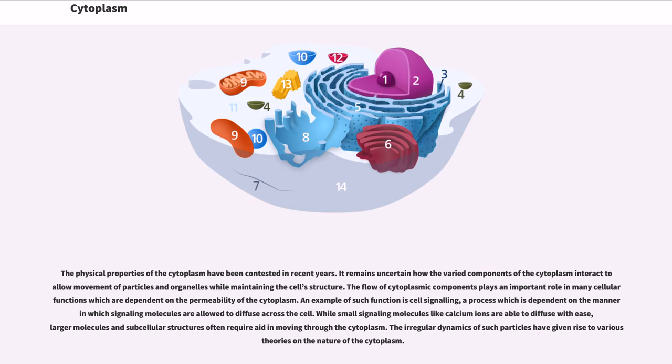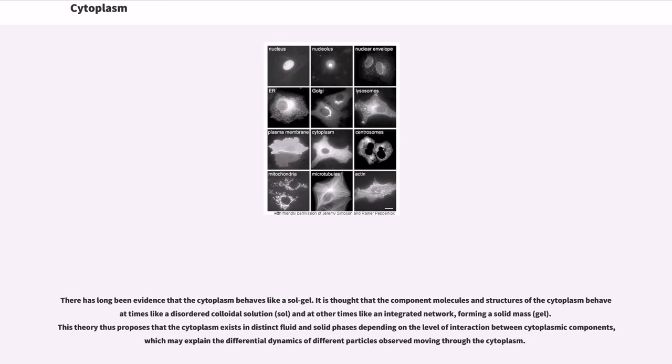The flow of cytoplasmic components plays an important role in many cellular functions which are dependent on the permeability of the cytoplasm. An example of such function is cell signaling, a process which is dependent on the manner in which signaling molecules are allowed to diffuse across the cell. While small signaling molecules like calcium ions are able to diffuse with ease, larger molecules and subcellular structures often require aid in moving through the cytoplasm.